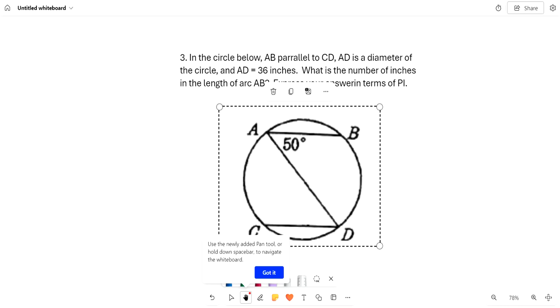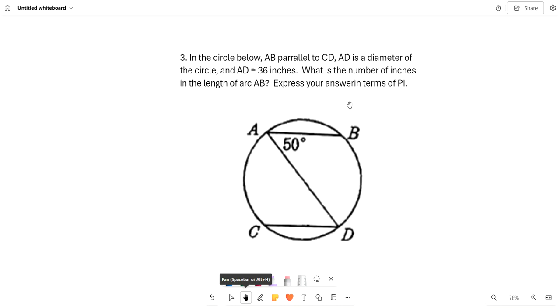So this is week 60 Tuesday and number 3 says in the circle below, AB is parallel to CD, AD is the diameter of the circle, and AD is 36 inches. What is the number of inches in the length of arc AB? Express your answer in terms of pi.